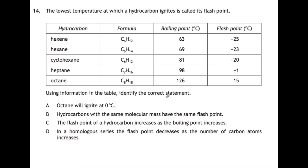Question 14. The lowest temperature at which a hydrocarbon ignites is called its flashpoint. You're given some information in the table about boiling points and flashpoints of different hydrocarbons and you need to identify the correct statement. The easiest way to go about this is to go through each statement in turn and work out if it's right. So we've got octane will ignite at 0 degrees. So here is octane. Its boiling point is 126 degrees and its flashpoint is 15. That is above 0 degrees. So it won't ignite at 0 degrees.